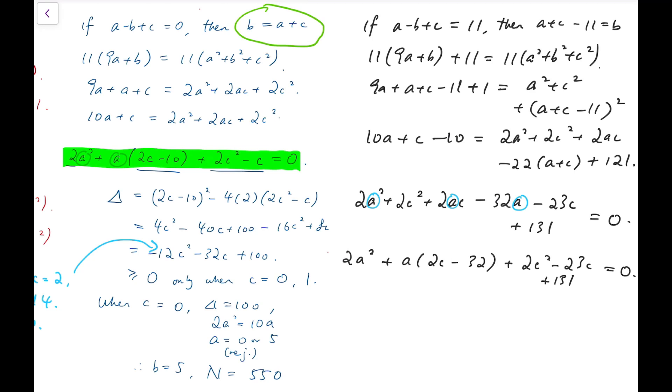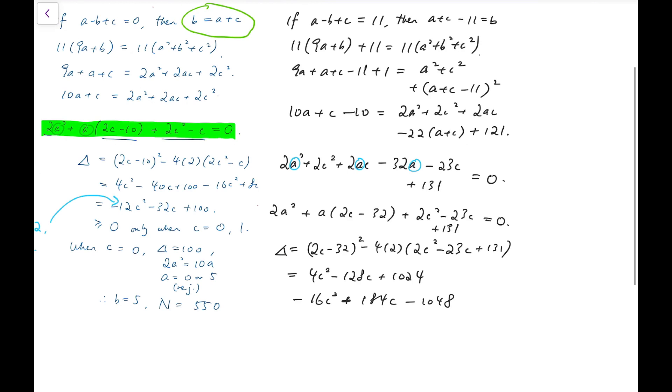So 2a squared plus a times 2c minus 32 plus 2c squared minus 23c plus 131 equals 0. Now as I've said just now, you may simply put values 1 to 9 into a and then solve the equations and see whether you have any positive integral solutions. But again, I'm going to demonstrate the delta method. So delta equals 2c minus 32 whole squared minus 4 times 2 times 2c squared minus 23c plus 131. Now for this delta, we have minus 12c squared plus 56c minus 24.